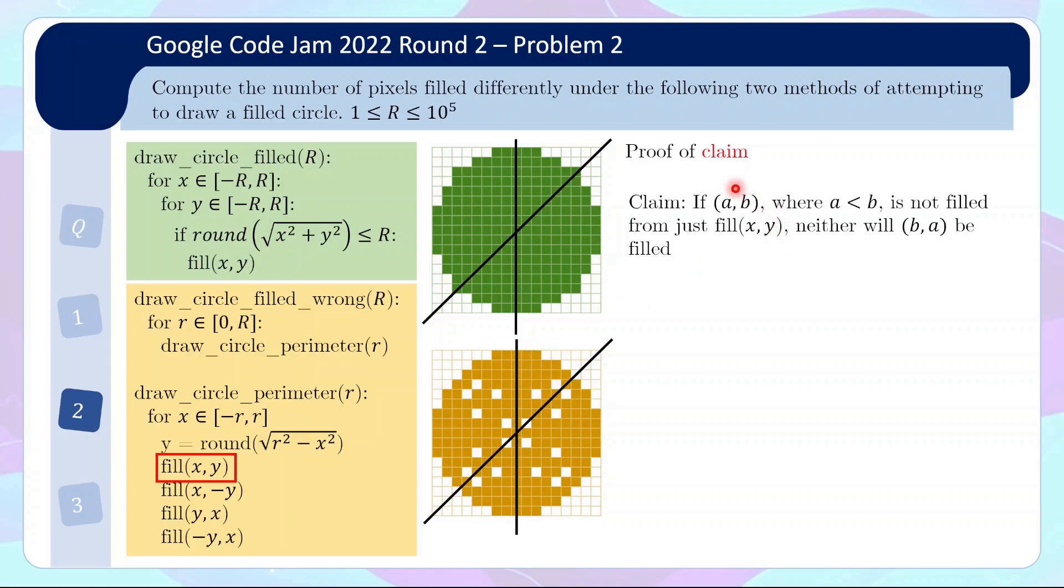So what we need to prove is that actually, if (a,b), where a less than b, being in the 8th of the diagram here, is not filled from the fill x,y step, then actually, neither will the mirror image be filled from the fill x,y step. So it is not possible that some hole here ends up being filled from the mirror image reflecting into it. And the proof of that is quite direct. Basically, the fact that (a,b) is not filled means that as you increase R, at some point, the sqrt(R^2 - a^2) is below b - 0.5. But the next value of R already brings it above b + 0.5. So the rounding will hit miss b.